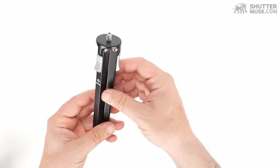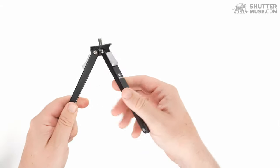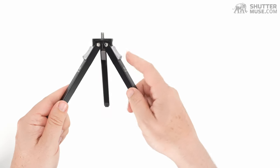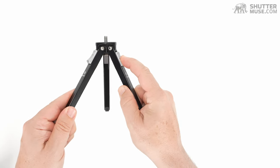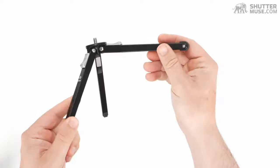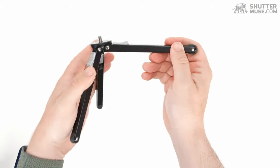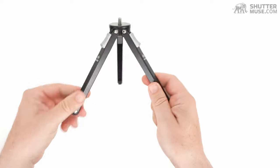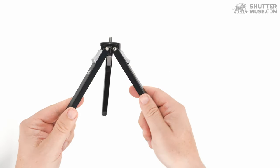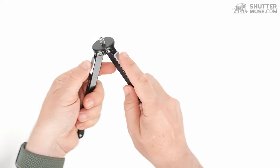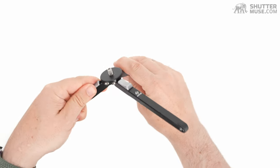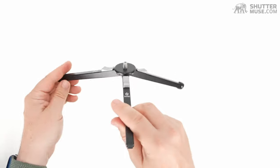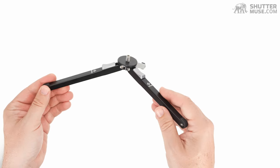Unlike a lot of tabletop tripods, we don't have a set leg angle. We actually have ratcheting legs here. So I can slide this little ratcheting switch up and we can get a different leg angle on each leg, and then that clicks with a little ratchet switch down into another two positions. So there are a total of three positions, and of course they're all individual, so we can create offset leg angles to get exactly the angle of camera that you need.